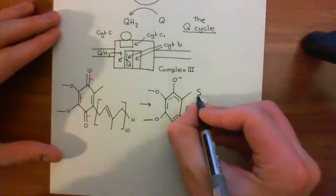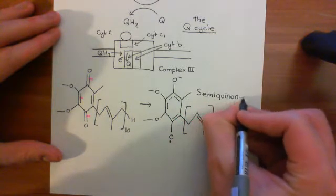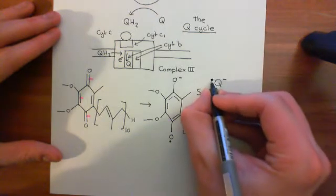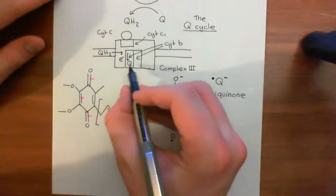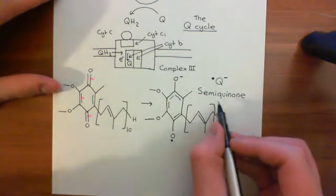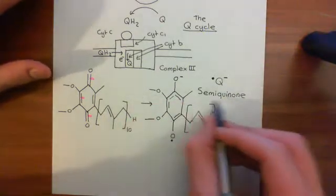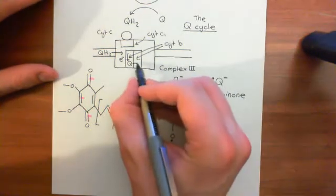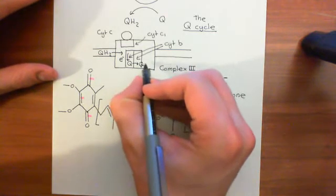This structure — where you have a free radical and a negative charge — is known as semiquinone, denoted by Q with a negative charge and a dot. The dot denotes the free radical, the negative charge denotes the negative charge. So this ubiquinone molecule becomes a semiquinone molecule, also sometimes called a semiubiquinone molecule, but more commonly just called semiquinone. It will actually move onto the other cytochrome B temporarily, but then move back.